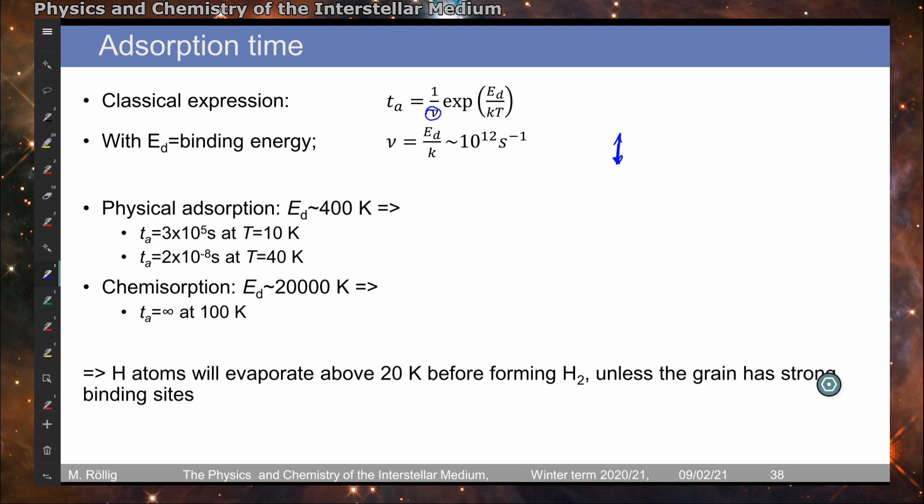Physical binding to the surface can be either just physically by, for example, weak binding van der Waals attraction. This corresponds to binding energies in the order of 400 Kelvin. Putting this into the formula for the adsorption time gives us something like 10^5 seconds at 10 Kelvin and 2 × 10^-8 seconds at 40 Kelvin. So an extremely steep dependence on the temperature, which means that a hydrogen atom will immediately evaporate from the grain if the grain is 20 Kelvin and warmer. And it will not be able to meet another hydrogen atom.